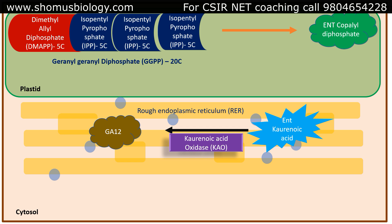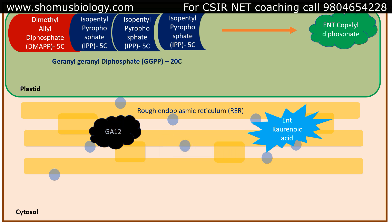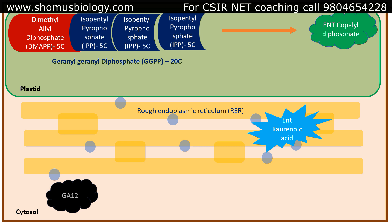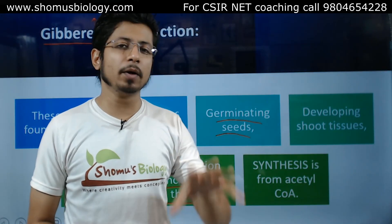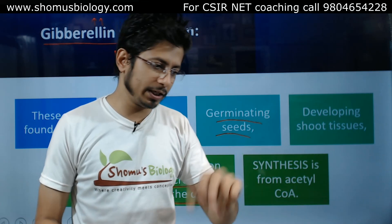Once GA12 is produced in the rough endoplasmic reticulum, it moves out into the cytosol. Further modification of GA12 is done in the cytosol, producing many different varieties of gibberellins such as GA1, GA2, GA53, GA20, and many more, each involved in specific activities. We now have a clear idea about gibberellic acid production in plants.